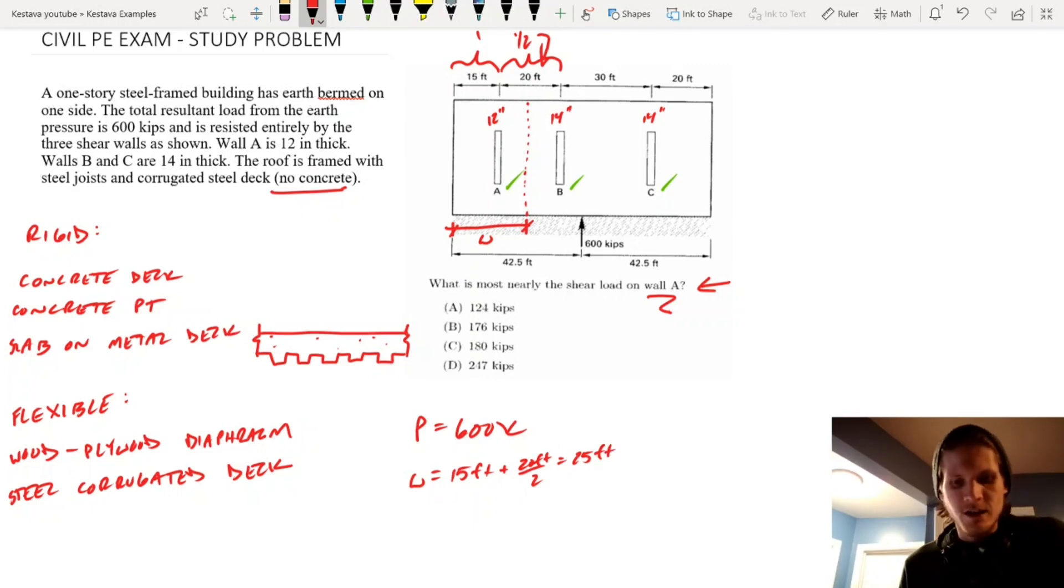Well, now you're looking at that 600 kip point load on there, but that is, they've said, is just the resultant load. And lateral loads are going to be distributed basically in a linear fashion along the diaphragm.